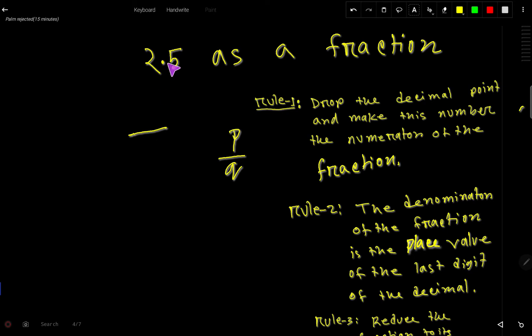To find numerator just drop this decimal point and write the number. So we are getting 25 after dropping decimal point. Then we have to now determine the denominator. The denominator is the place value of the last digit after decimal. So this place is 10th place so we have to write here 10.